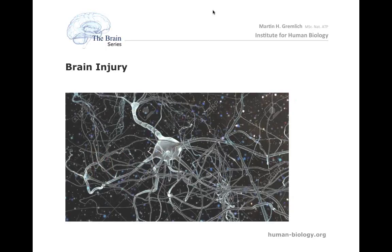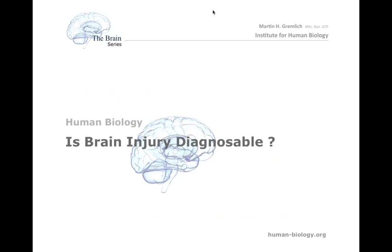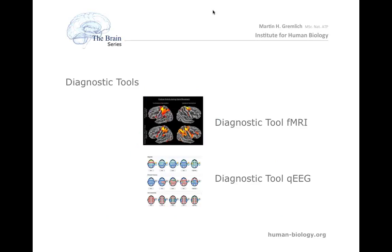So what is brain injury? It is a very simple thing: some neurons are out of service. That's it. The reason isn't all that important. The question is: is brain injury diagnosable? Can we find out whether this has happened? We have two types of primary diagnostic high-tech tools available: the fMRI technology group and EEG technology.